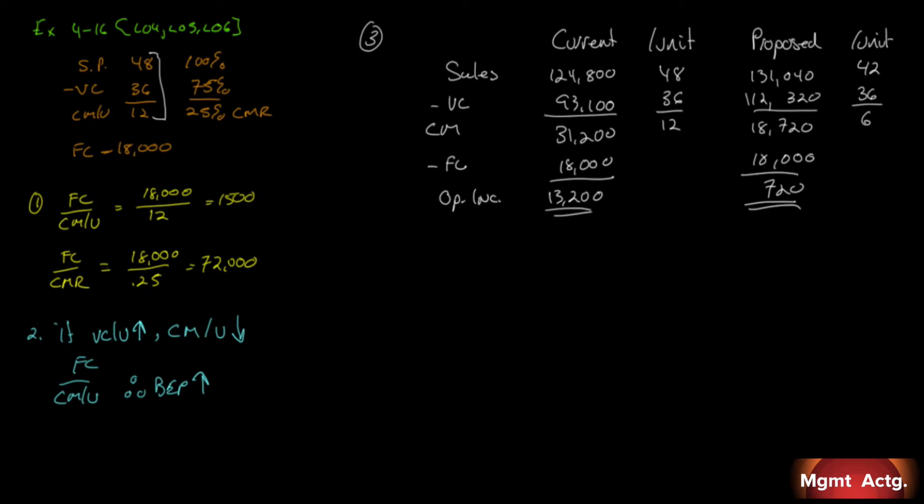So let's move on to the next part of this. Refer to the data in 3 above. How many tackle boxes would have to be sold at the new selling price to yield a minimum operating income of $14,400 per month? So what we're asking is this. Fixed cost plus target profit, and it's saying how many. Refer to how many tackle boxes, so it's per unit. Because we want to know how many units, so it has to be, remember?